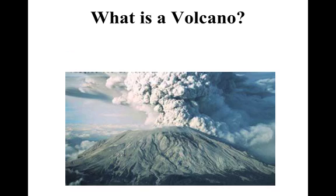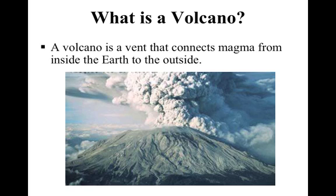First, let's talk about what is a volcano. A volcano is a vent that connects the magma from the inside of the earth to the outside of the earth. So anytime we've got that magma coming up out of the ground and becoming lava, we now have a volcano.